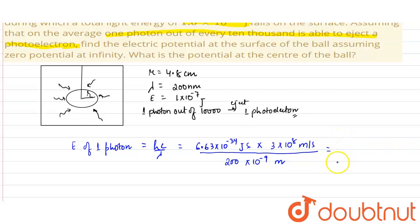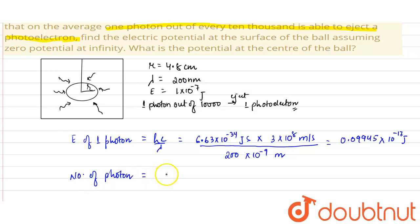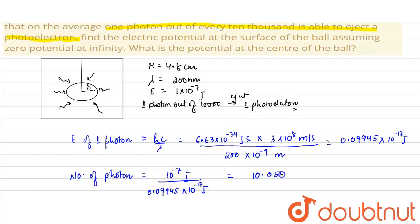From here we get the energy of 1 photon, which comes out as approximately 0.9945 × 10⁻¹⁸ joules. The total number of photons equals the total energy, which is 10⁻⁷ joules, divided by the energy of 1 photon, that is 0.9945 × 10⁻¹⁸ joules. From here we get the total number of photons, which comes out as approximately 10.055 × 10¹⁰ photons.